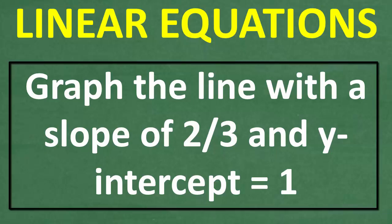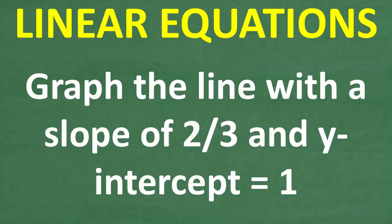It says, graph the line with a slope of two-thirds and a y-intercept equal to 1. So if you think you could do this, go ahead and take out a piece of paper and a pencil and just do a quick sketch. It doesn't have to be perfect. Just see if we can get an accurate sketch of this line with a slope of two-thirds and a y-intercept equal to 1.